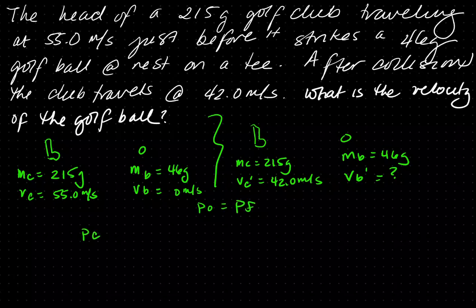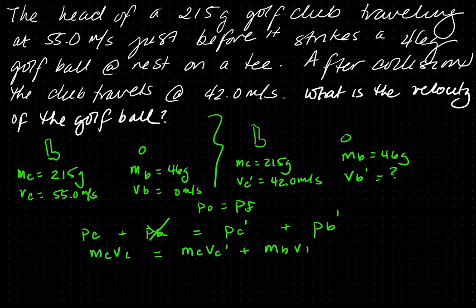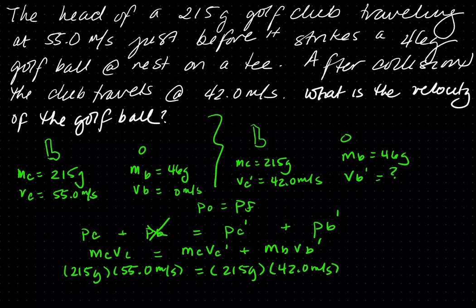Momentum is conserved, so we have momentum of the club plus the momentum of the ball equal to momentum of the club prime plus momentum of the ball prime. Prime just tells you it is different from the initial momentum. We can cancel out the ball because it's at rest. So the equation is MC·VC = MC·VC prime + MB·VB prime. That is 215 grams times 55.0 meters per second equals 215 grams times 42.0 meters per second plus 46 grams times VB prime. Note that I did not convert grams into kilograms.